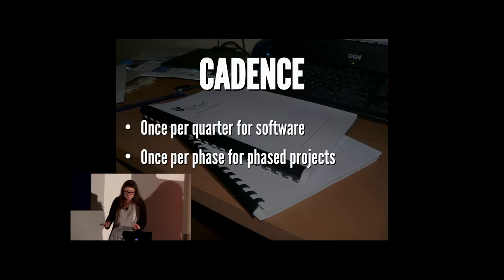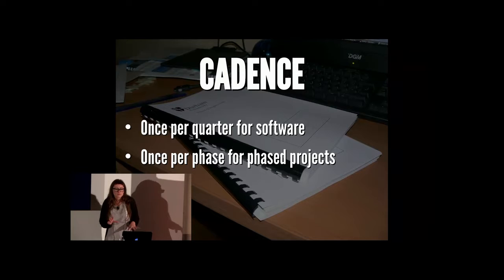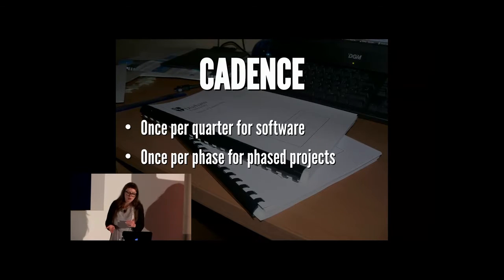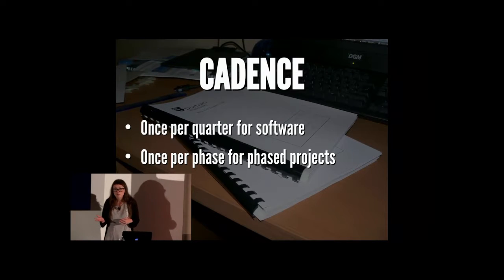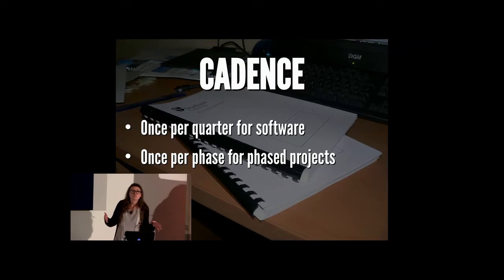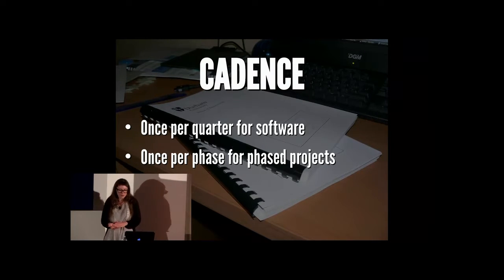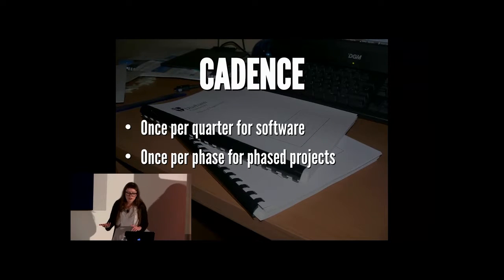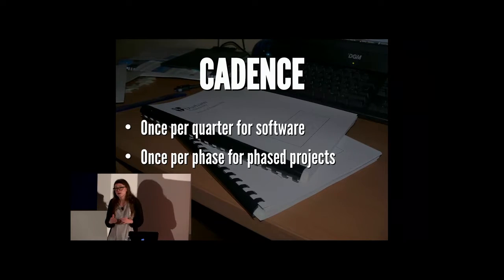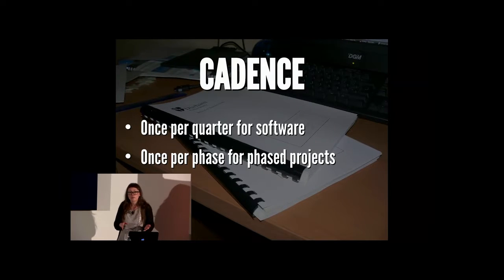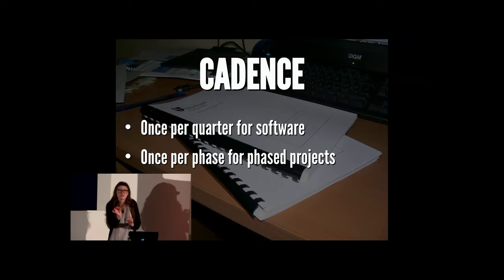This is a process — you're not going to get all of the user stories you need for a project in one meeting. You should have a story writing workshop once per quarter for ongoing builds, especially with software, or once per phase for a phased project. So if you're rolling out a website in eight months over three phases, you'll meet three times to break up the work. This ensures that your team can stay agile and not get bogged down by too much documentation. You want to deliver the right amount of documentation at the right time — too little and people get lost, too much is information overload.